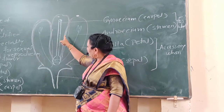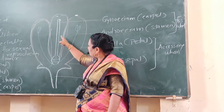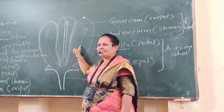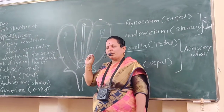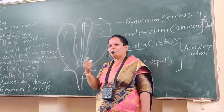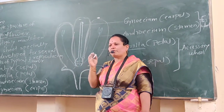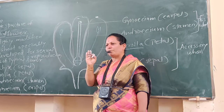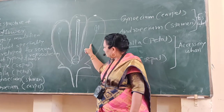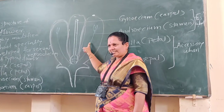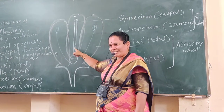The two innermost whorls — gynoecium and androecium — are called essential whorls. Why? Because they are essential for reproduction and for the production of fruit.